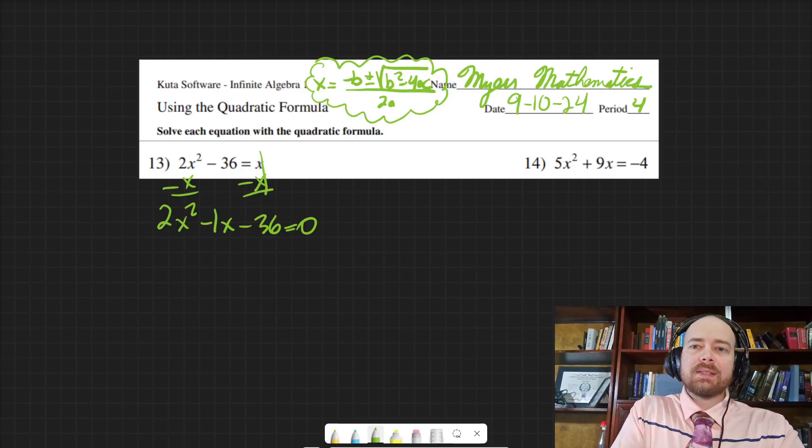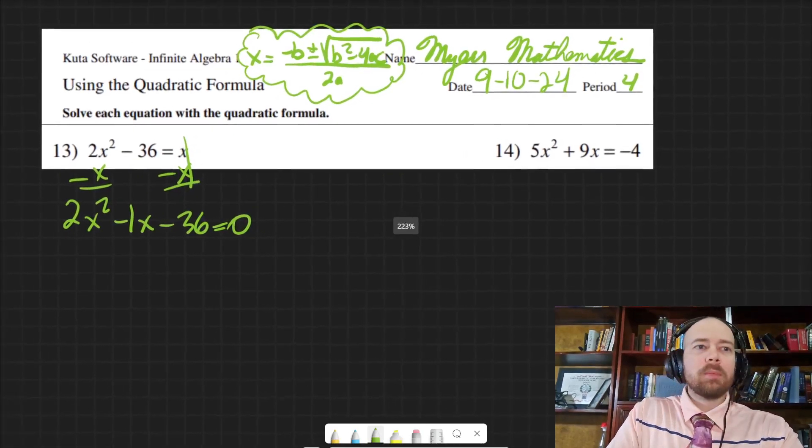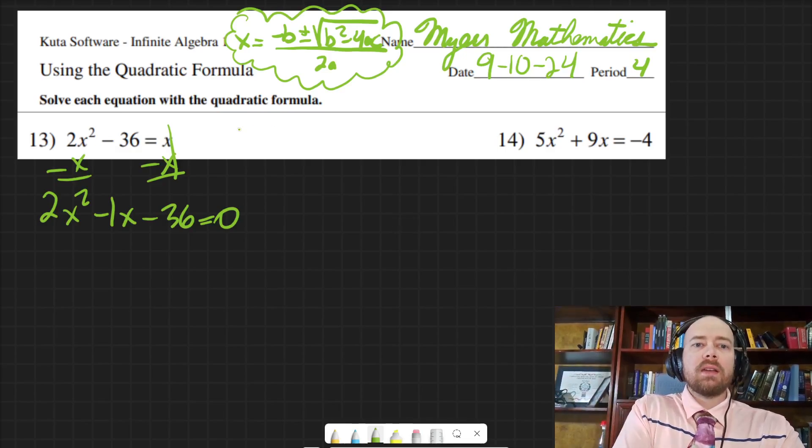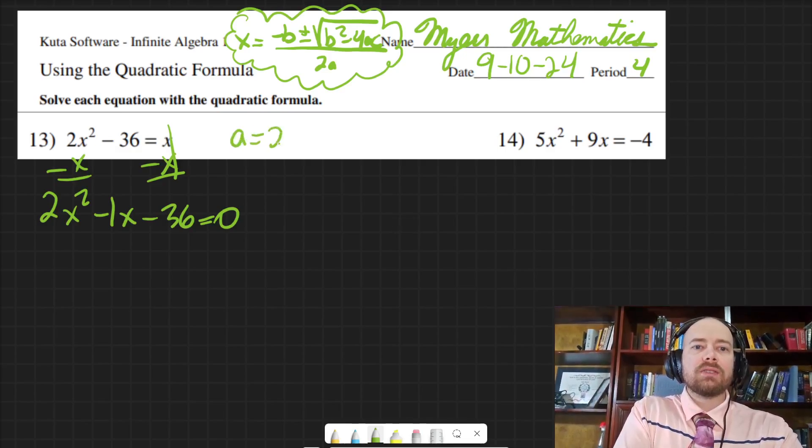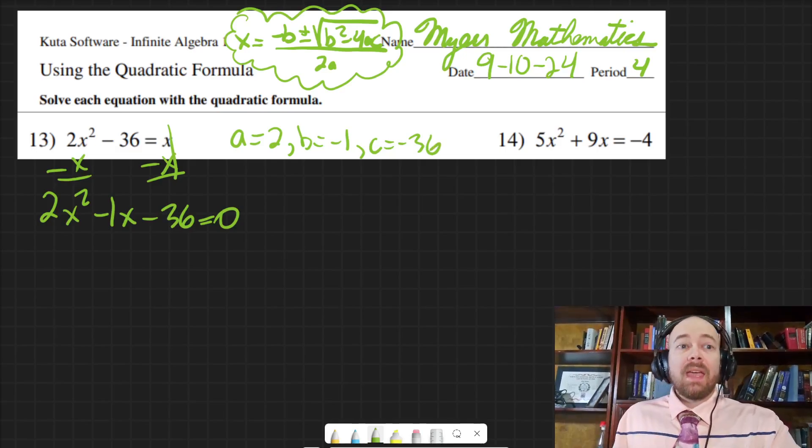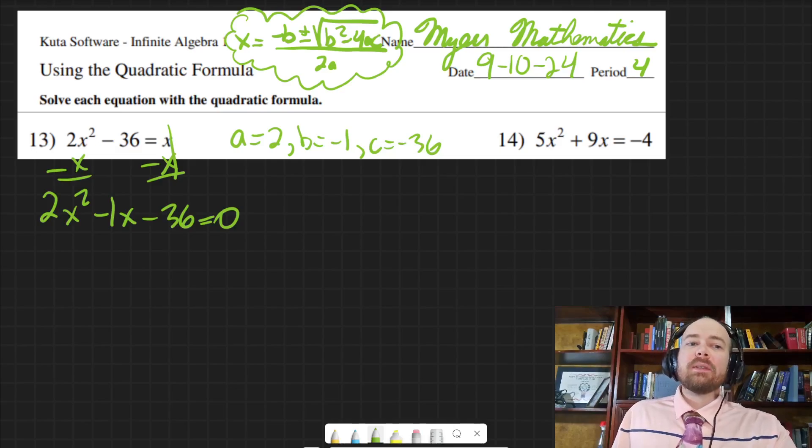So then I know now that a is 2, b is negative 1, and c is negative 36. And they say to use the quadratic formula. So in order to get full credit, if it says use quadratic formula, then you got to use quadratic formula, even if some other method is better.